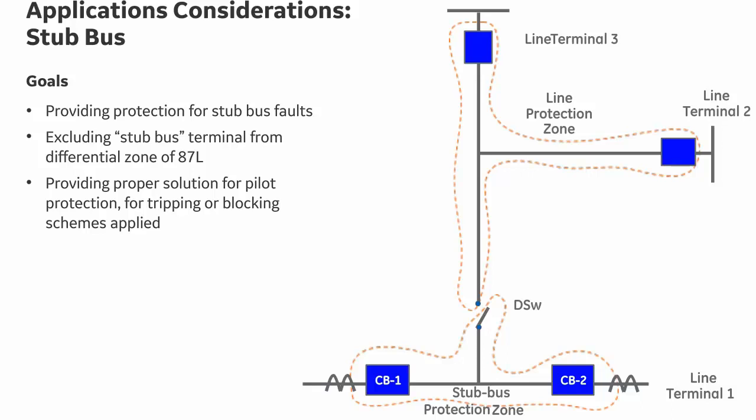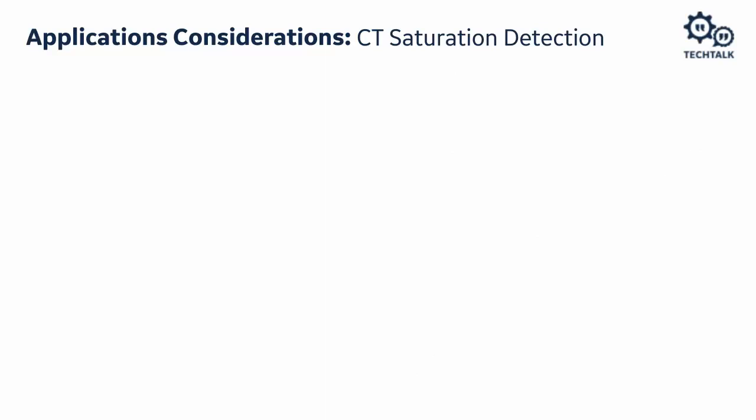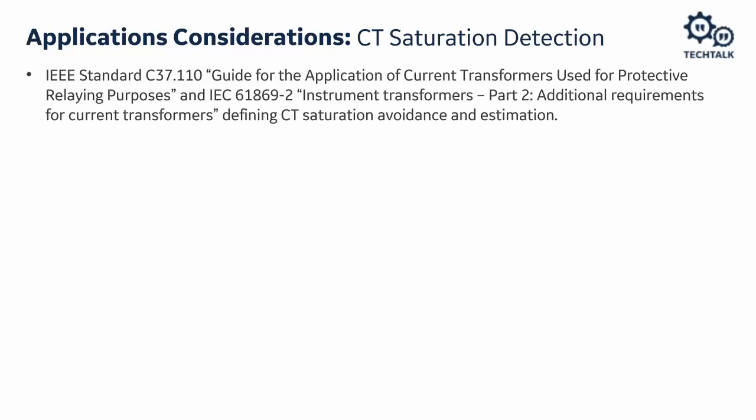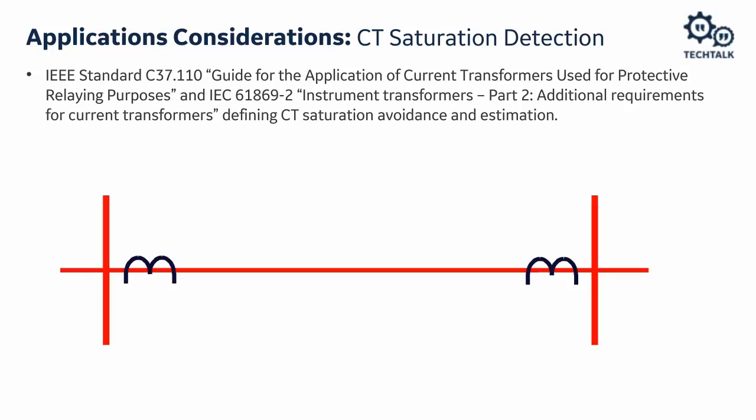For CT saturation, we have IEEE standard C37.110 — a guide for application of current transformers used for protective relaying — and IEC 61869-2, additional requirements for current transformers, defining CT saturation avoidance estimation. It is desirable to avoid saturation, but it's not always possible and requires increasingly expensive and larger CTs. When we have internal faults, CT saturation does not cause a problem, but when we have external faults with asymmetrical CT saturation, it may be a problem.